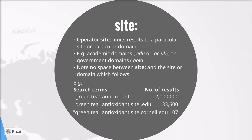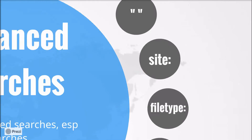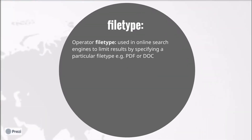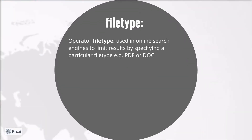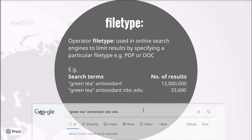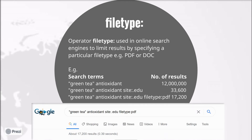Next, the file type operator. Again, this is used for search engines and it limits the results by specifying a particular file type such as .pdf or .doc. This might be useful if you're trying to find a research article which may often exist as a .pdf document on the web. So again, using the example green tea antioxidant — if I now limit that by just looking for .pdf documents, then I have just over 17,000.